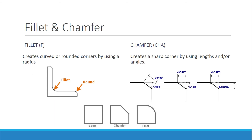Chamfers and fillets. The fillet command is going to give you your fillets and rounds. You're going to go in and tell it what radius you have, and that's how you create your fillets. The chamfer is going to make sharp corners, and you define that either by using a length and an angle, or just using two lengths. Look at the lecture demos — I go in specifically on how to do both. These are very useful commands, especially the fillet command.